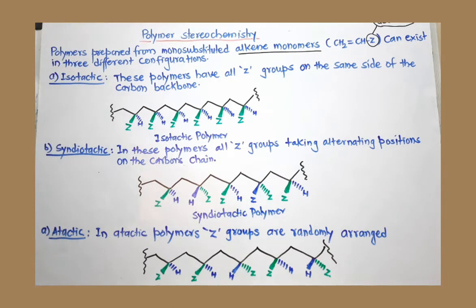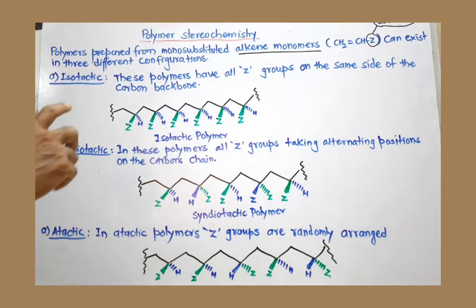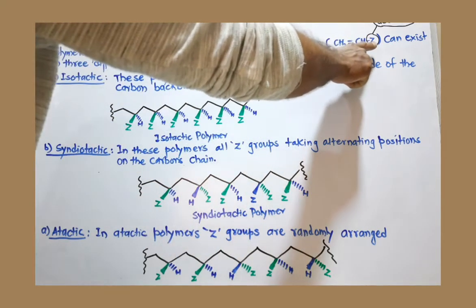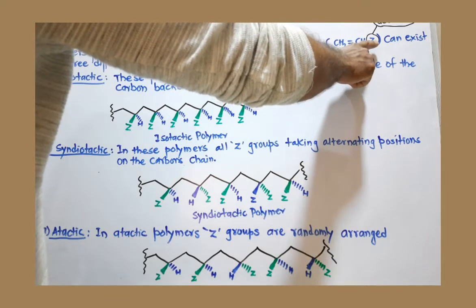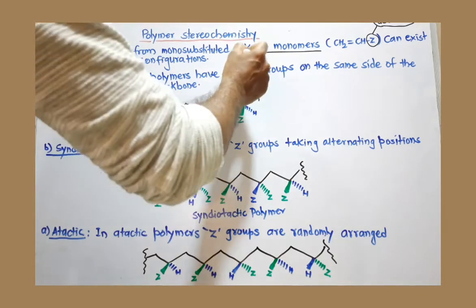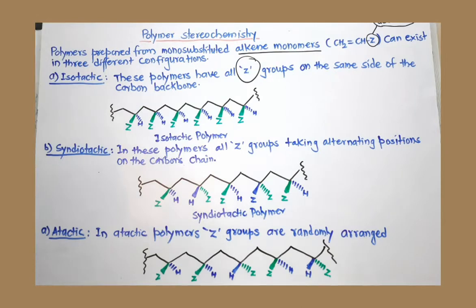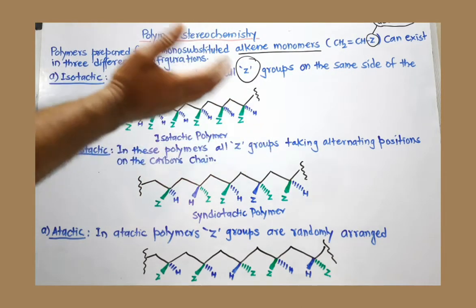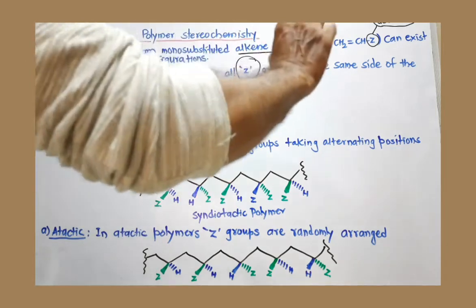There are three types of stereoisomers possible in polymers formed from monomers having one side chain. The first is isotactic. As the name indicates, all Z groups — the side chains — are oriented toward one side, either above or below the carbon chain.